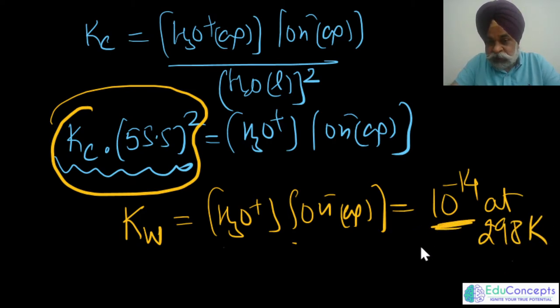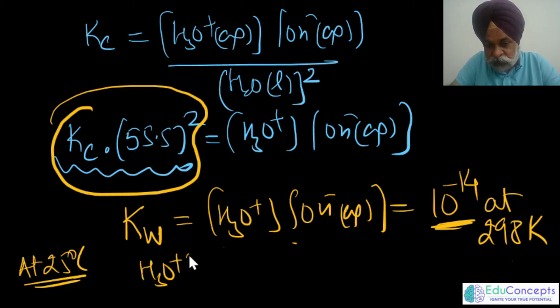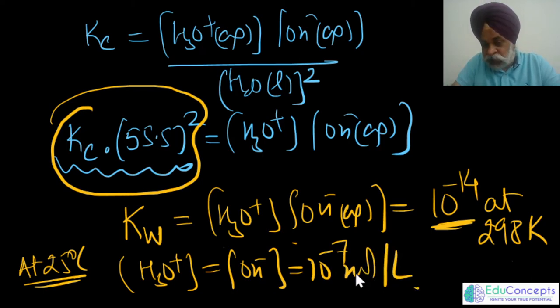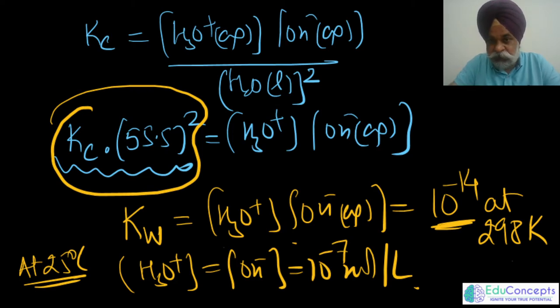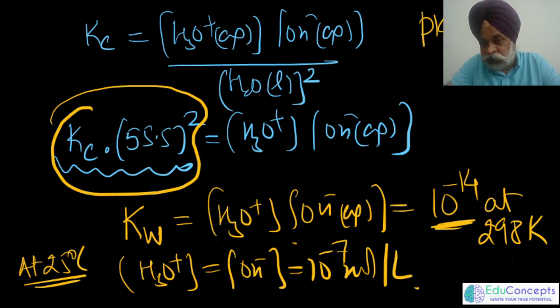For neutral water at 25°C, [H₃O⁺] = [OH⁻] = 10⁻⁷ mol/L. In one liter of water there are very few moles of H₃O⁺ and OH⁻, and they are equal — this is Kw. Also, pKw = −log(Kw) = −log(10⁻¹⁴) = 14. So the pKw of water at 298 K is 14.